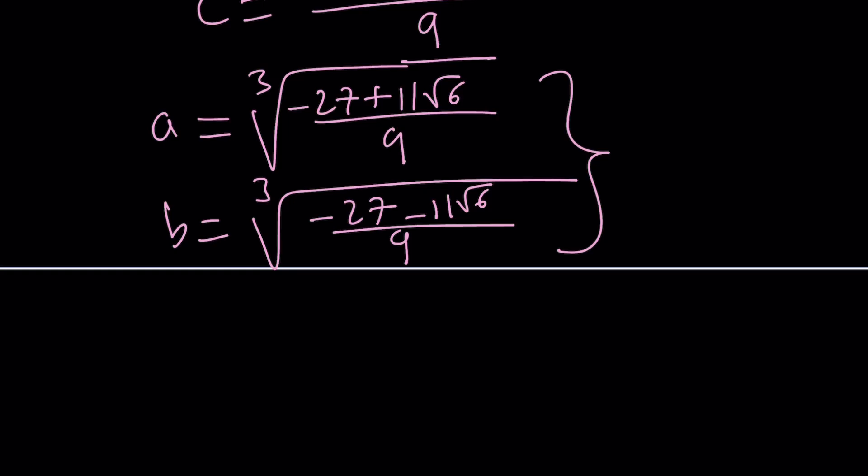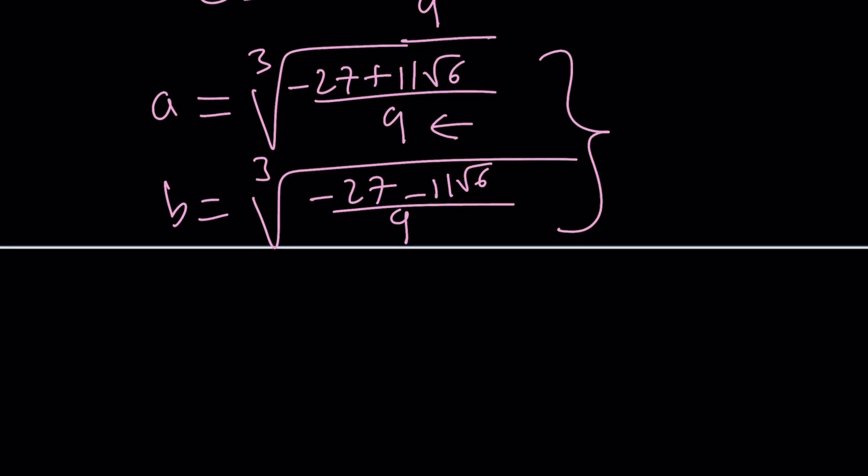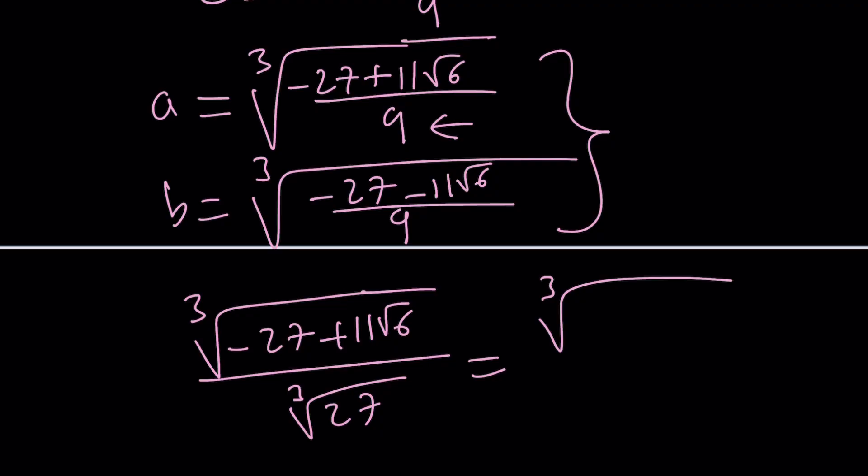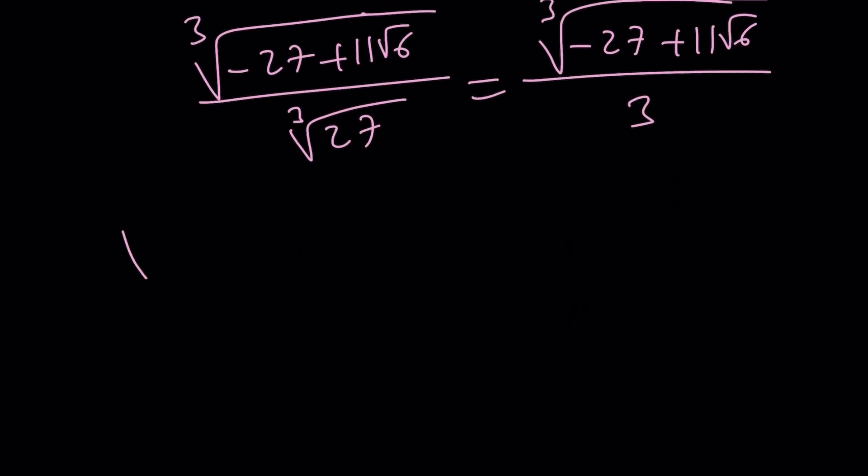You can multiply the top and the bottom by 3 to turn this into 27 so you can take it out of the radical. We can write this as, if you multiply by 3, it's going to be the cube root of 27, which is 3. Now all we have to do is figure out this radical: what is the cube root of negative 27 plus 11 root 6? To find it, you're probably going to assume it's something like a plus b root 6 or a minus b root 6.